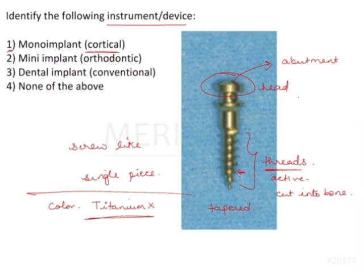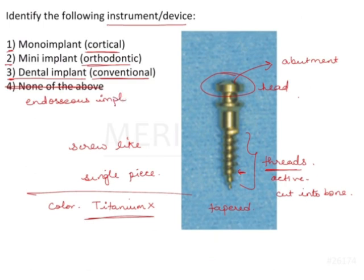Let's have a look at the options: mono implant (also known as cortical implant), mini implant or orthodontic implant, dental implant or conventional implant, and none of the above. Looking at the image, it definitely looks like an implant, so we can eliminate 'none of the above.' The third option is dental implant — these are endosseous implants whenever the word dental implant is used.